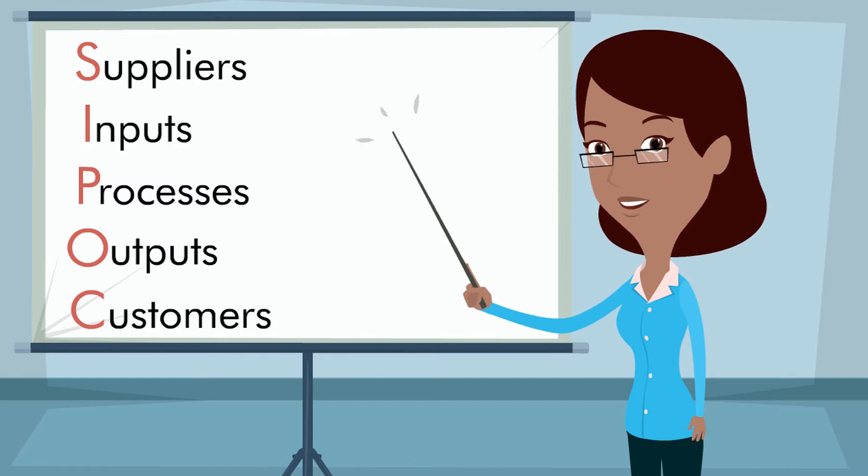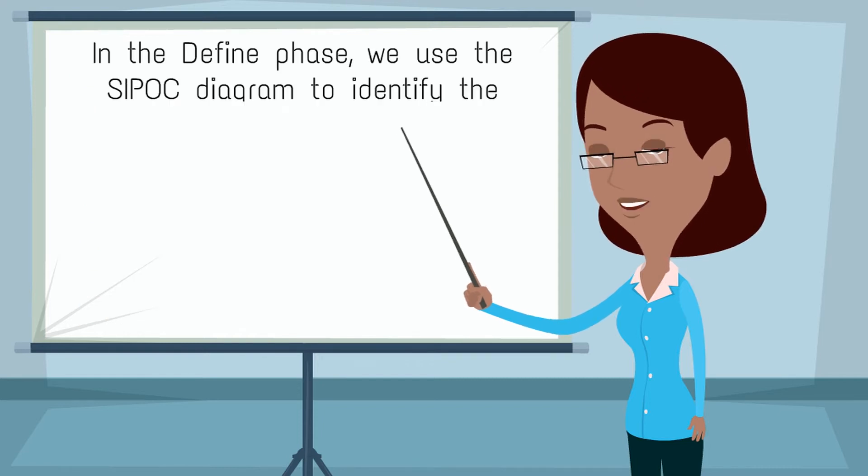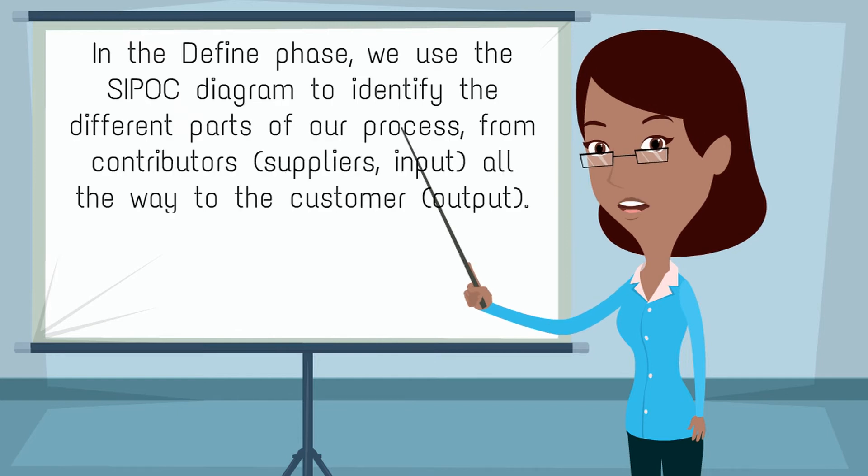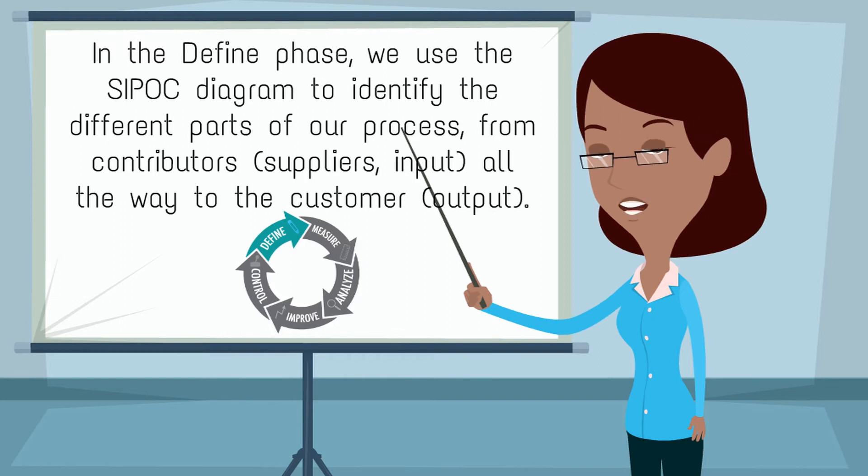In the defined phase, we use the SIPOC diagram to identify the different parts of our process, from contributors, suppliers, input, all the way to the customer, output.